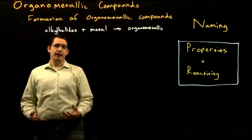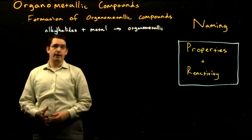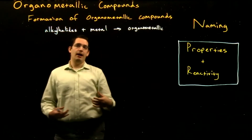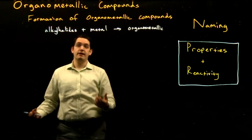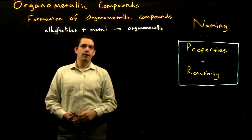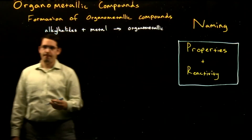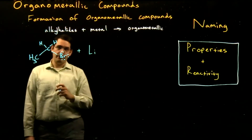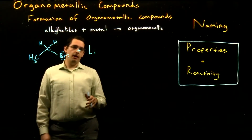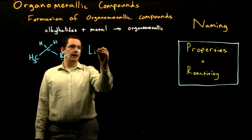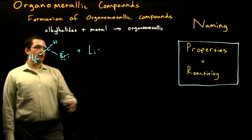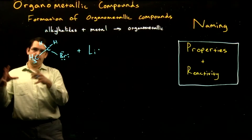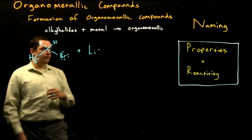How do we form these highly unstable and reactive organometallic compounds? To do this we're going to combine alkyl halides with our metal, which will then allow them to react through a single electron transfer reaction to form our desired organometallic compound. Let's look at the example of bromoethane reacting with lithium. Lithium is in the first column of the periodic table, which means it has a single valence electron it wants to give away in order to achieve a full octet.